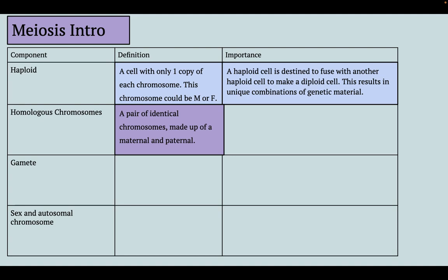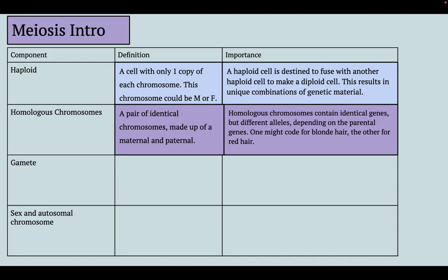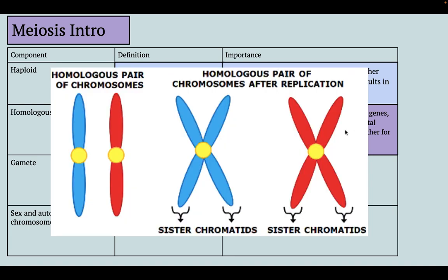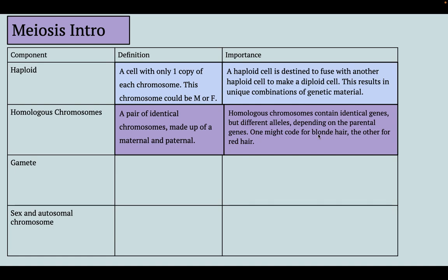Homologous chromosomes are a pair of identical chromosomes made up of one maternal and one paternal set of DNA. They contain identical genes, but often different alleles depending on the parental genes that you inherit. For example, your mom might have alleles for blonde hair and your dad might have alleles for red hair.